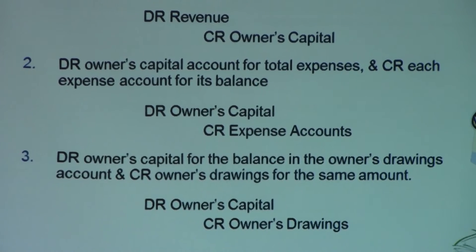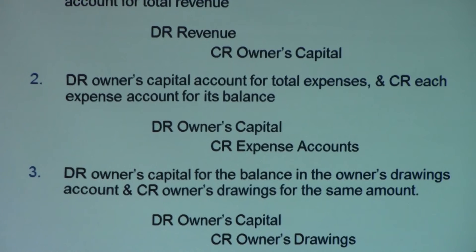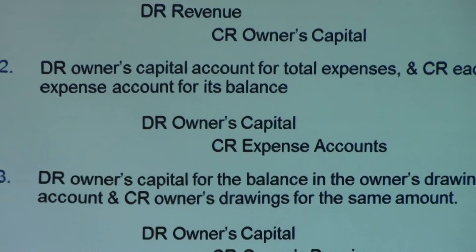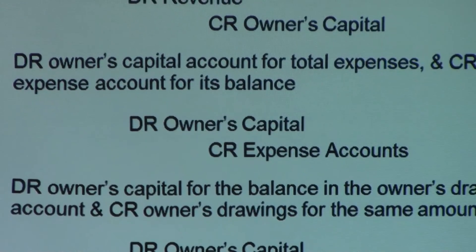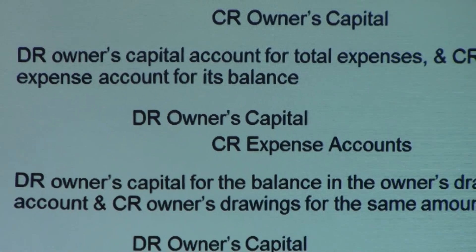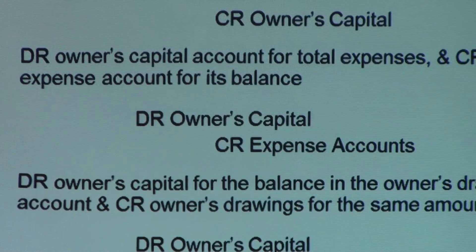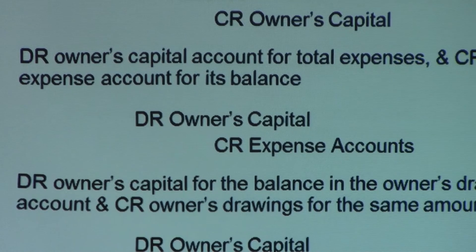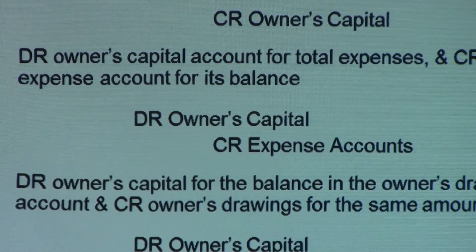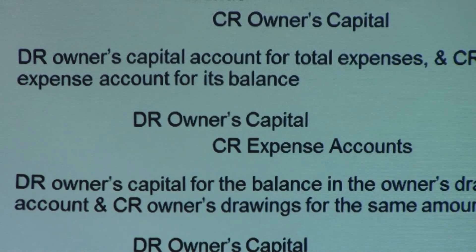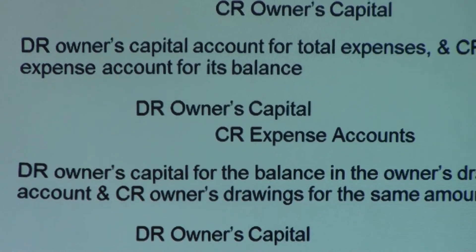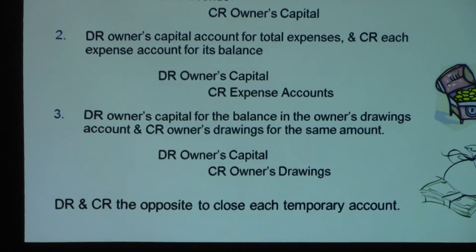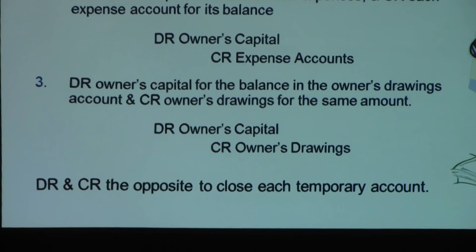You also need to close the expense accounts. Since expense accounts were debited earlier, you close them by crediting the expense accounts and debiting owner's capital — so those expenses go against revenues within owner's capital. Then, of course, there is the drawings account. The drawings account acts very similar to an expense account, so you do the same entry: debit owner's capital and credit owner's drawings.